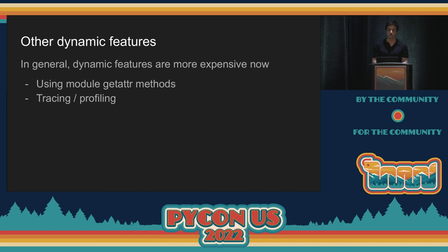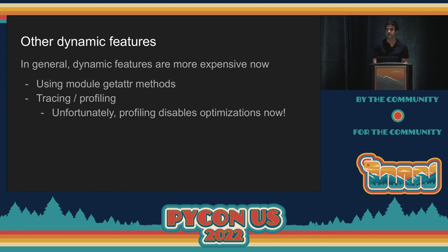I'm calling out a couple of other dynamic features here. Unlike the ones I talked about before, these were already expensive, but now they're getting even more expensive because they inhibit other optimizations — not just expensive when you use them, but they might affect other parts of your code that can no longer be optimized. In particular, a problem we need to solve as a community is attaching a profiler to optimized code. At least in Piston, attaching a profiler will tend to disable almost all of the optimizations. The code you end up profiling might look very different than the code with optimizations on. This is a hard problem and we might need a new profiling API.